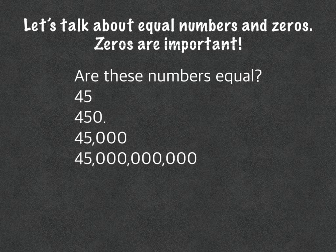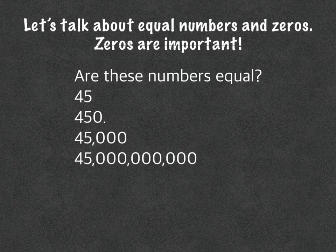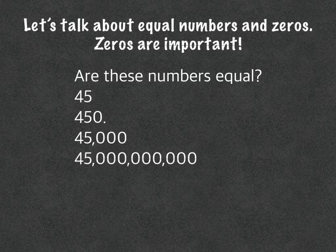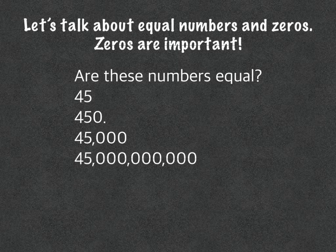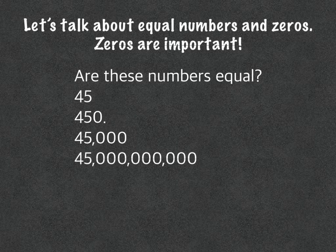So if we look at these numbers, they all start with four and five, but this first one is 45, this one is 450, this is 45,000, and this is 45 trillion — super big, right? So you can see that these zeros, when they're put on the whole number side of our decimal, they're really going to change our value. This is getting much bigger as we get down to the bottom.